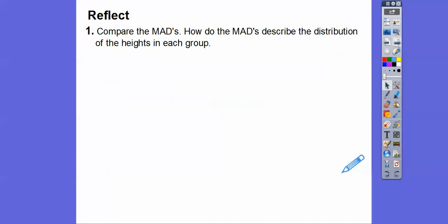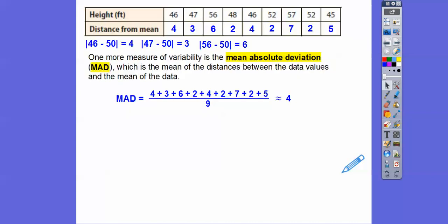Add those up and divide by 9 and we get about 4. Now, the other one was 3. I'm going to go too fast, you guys. I'm sorry. So, we just add them all up and divide by 9. And it comes to about 4.